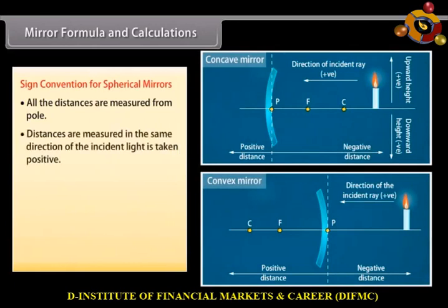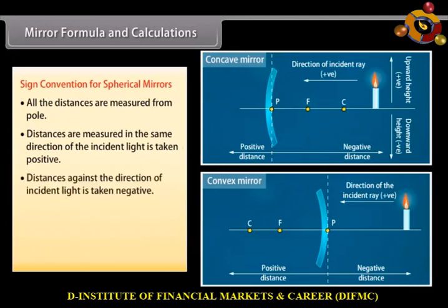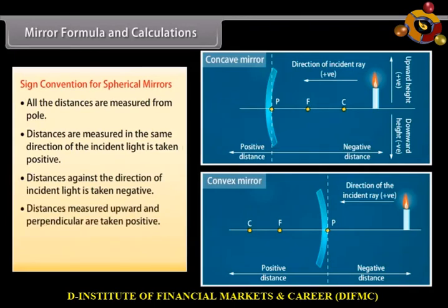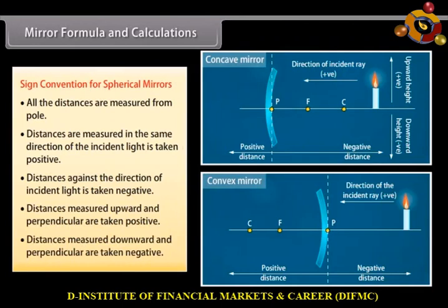Sign convention for spherical mirrors: all distances are measured from the pole. Distances measured in the same direction as the incident light are taken as positive. Distances measured against the direction of incident light are taken as negative. Distances measured upward and perpendicular to the principal axis are taken as positive, and distances measured downward and perpendicular are taken as negative.